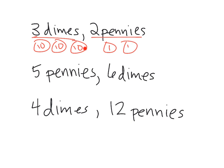Or perhaps they might say, well, three dimes is 30, two pennies is two, 30 plus two is 32, 32 cents. I'm going to leave it up to you.